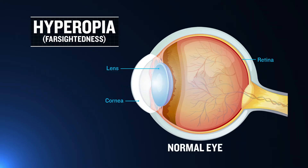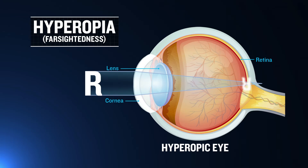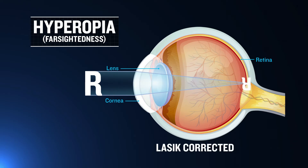Farsightedness, or hyperopia, is the inability to see close objects clearly. Light rays from nearby objects converge behind the retina so that they form a blurred image on the retina. LASIK surgery removes the outer edges of the cornea to steepen its curvature, which increases the amount that light bends.